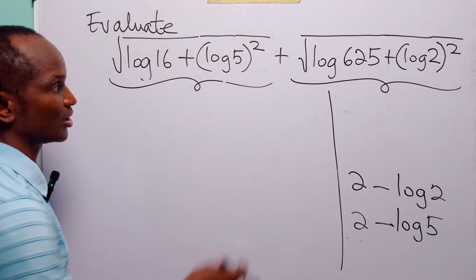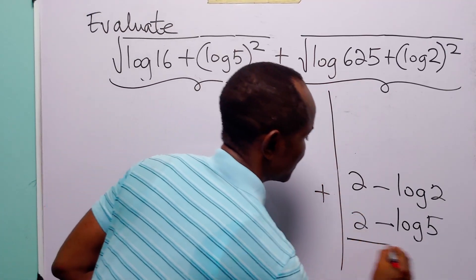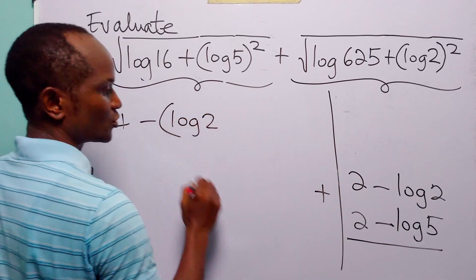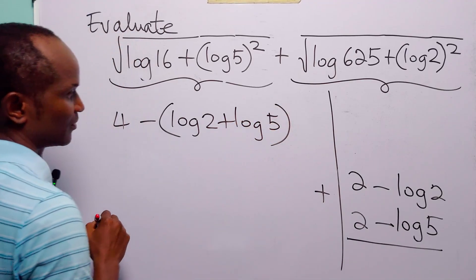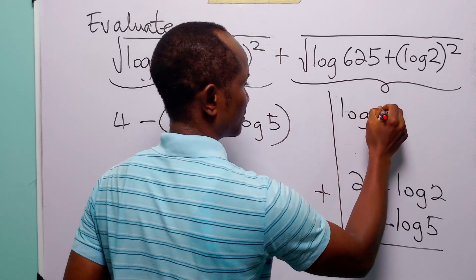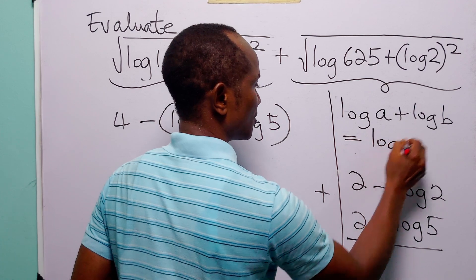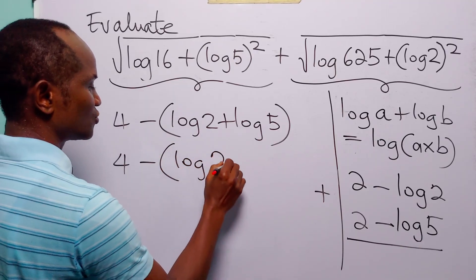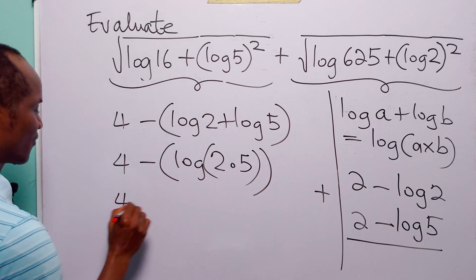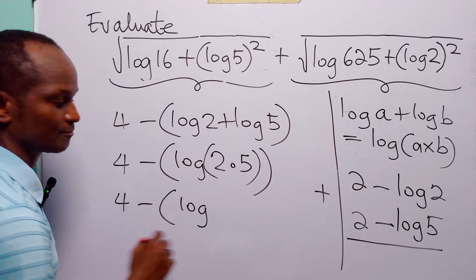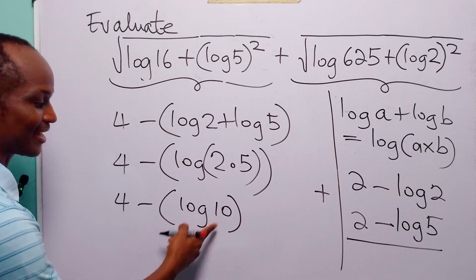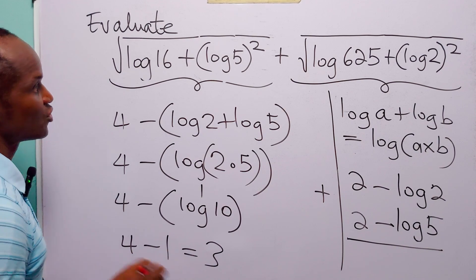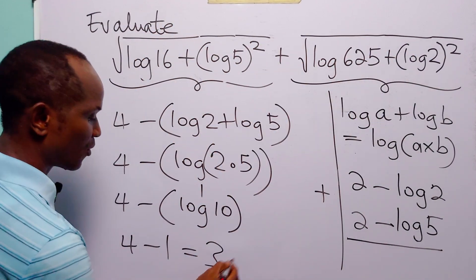For the last part of the calculation we simply add these two results: (2 minus log 5) plus (2 minus log 2). That gives 4 minus (log 2 plus log 5). Remembering that log a plus log b equals log(ab), this becomes 4 minus log(2 times 5), which is 4 minus log 10. Once more log base 10 of 10 equals 1, so we have 4 minus 1, which equals 3. The value of this log expression is 3.